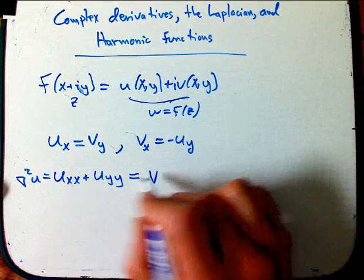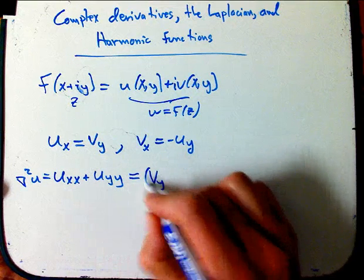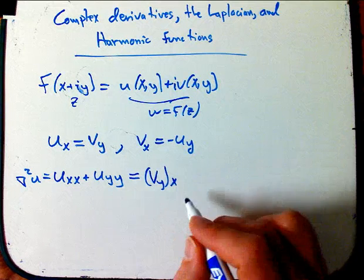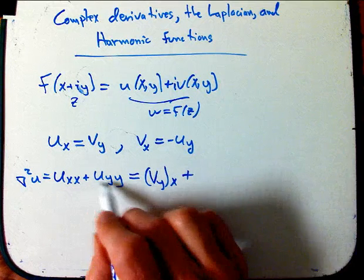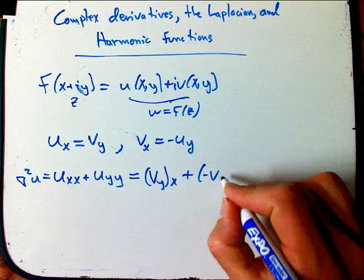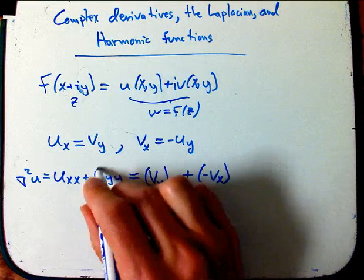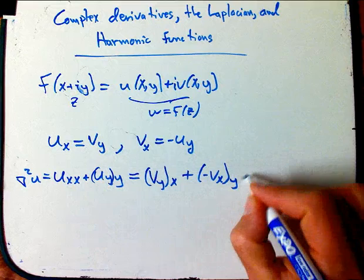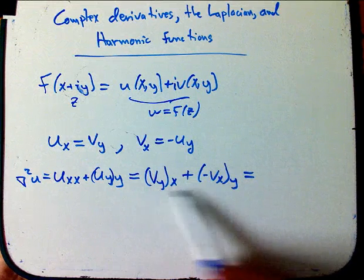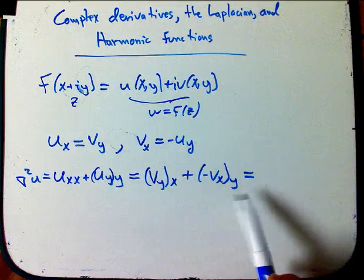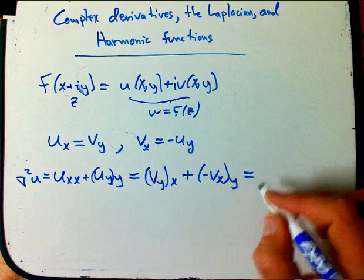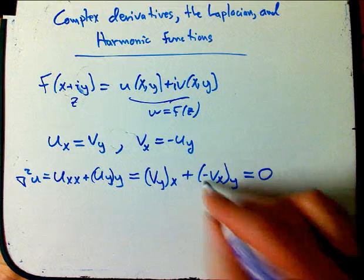Since ux equals vy, the second partial of u with respect to x twice is the derivative of vy by x. And since uy equals minus vx, the other term is the derivative of minus vx by y. Clairaut's theorem tells us it doesn't matter what order we take partial derivatives in, as long as these are even minimally nice functions — and it turns out they always are. So those two terms cancel because of the minus sign, and the result is zero.